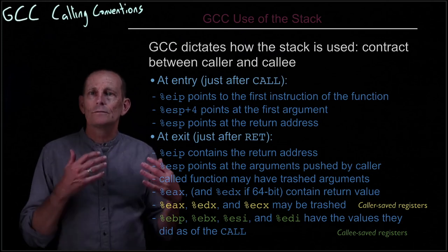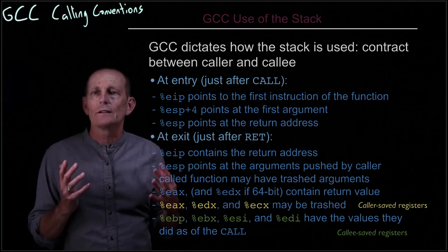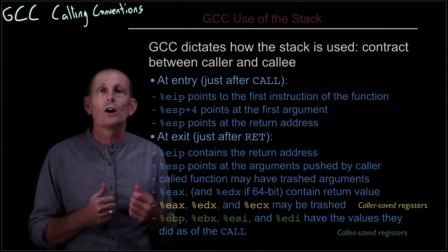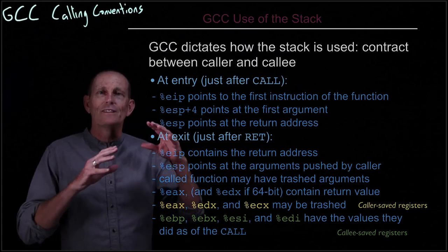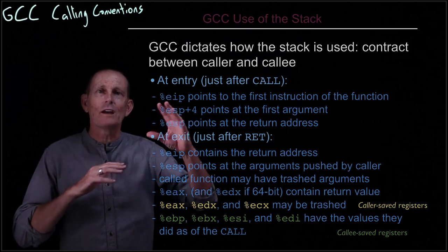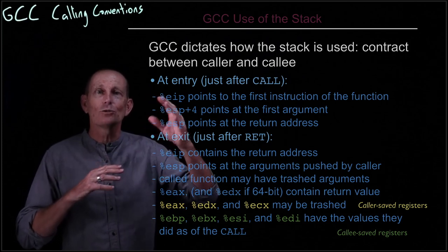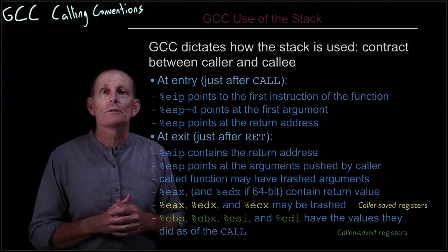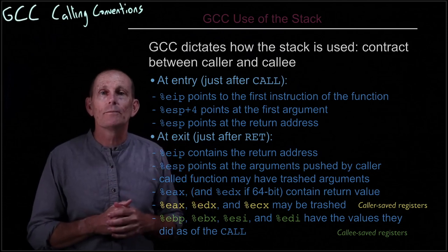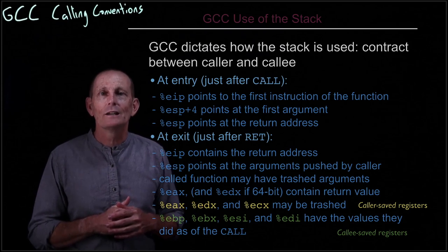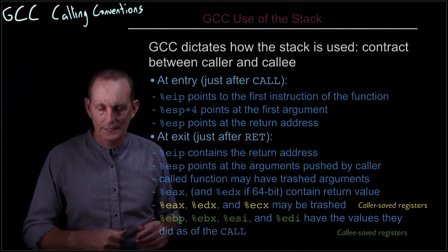So there's a contract, so to speak, between callers and callees. When one function calls another function, they both have to agree on where the parameters will be, the order of the parameters, and where return results will get returned, and so on. This is the contract that's used by GCC for x86.